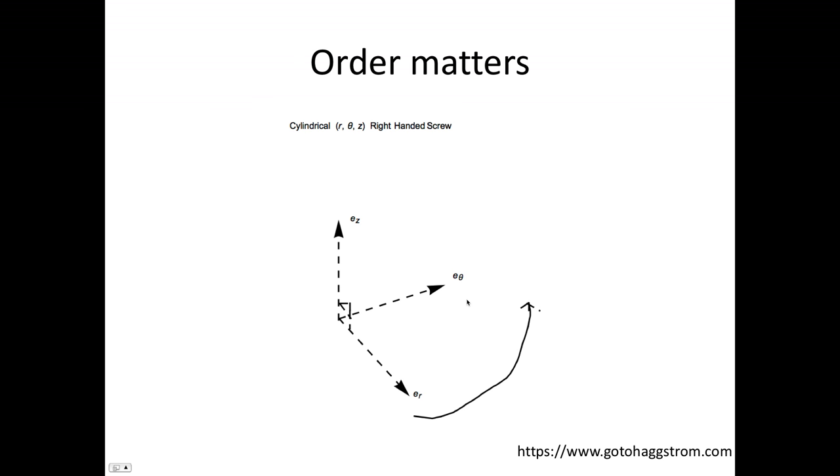And order does matter, because if we take the cylindrical case, here we have the cylindrical coordinates r, theta, z. Now, if this thing here, er, is the radial vector, and e theta is the angular vector, and ez is the vertical vector,